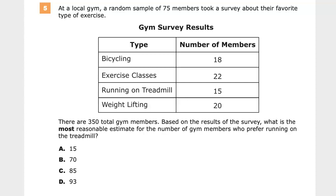And they picked 75 members, which is good because that means you don't have to sit here and add all these numbers up. 75. Now there are 350 total gym members. Based on the results of the survey, what is the most reasonable estimate for the number of gym members who prefer running on the treadmill?